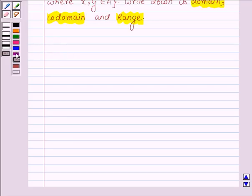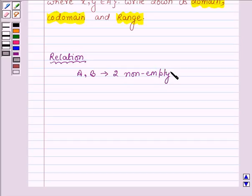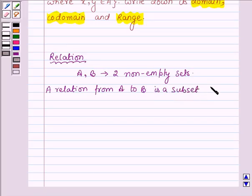So first let us learn some simple definitions with the help of which we will solve the above problem. Let us start with the term relation. Suppose we have any two non-empty sets A and B. A relation from A to B is a subset of the Cartesian product A cross B. Now the subset is derived by describing a relationship between the first element and the second element of the ordered pair A cross B. The second element is called the image of the first element.